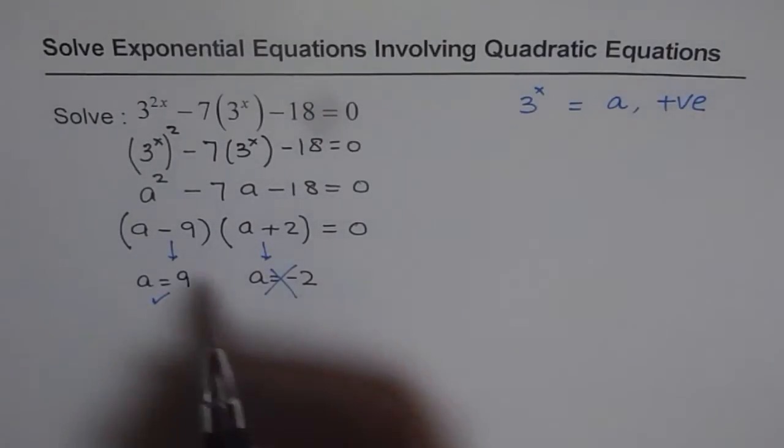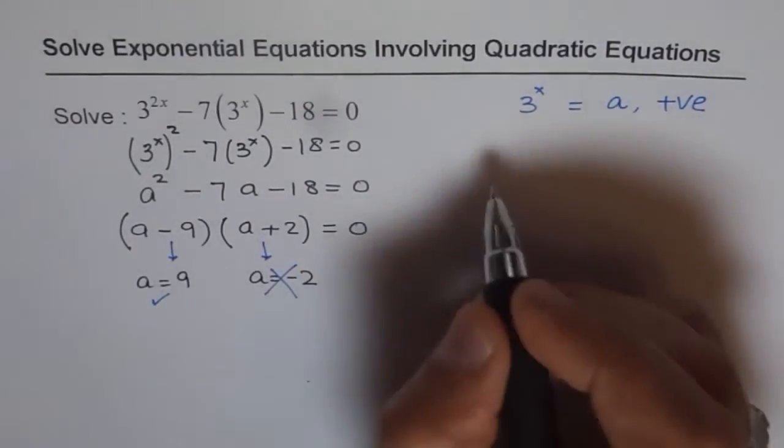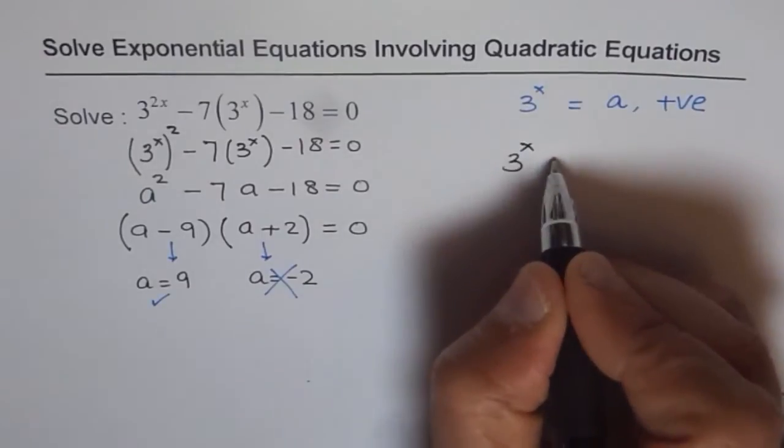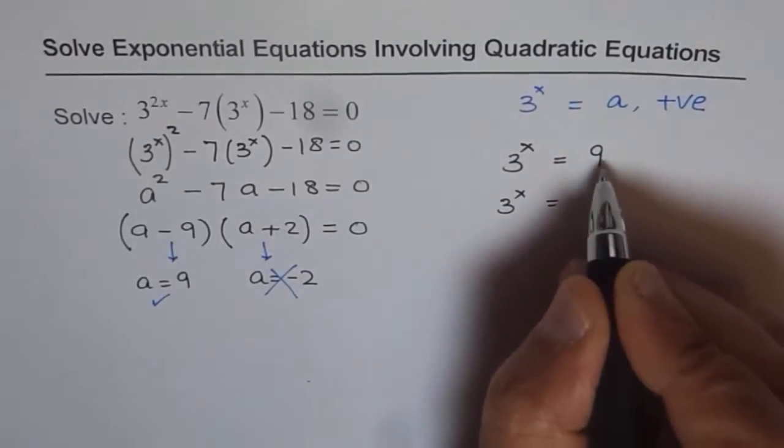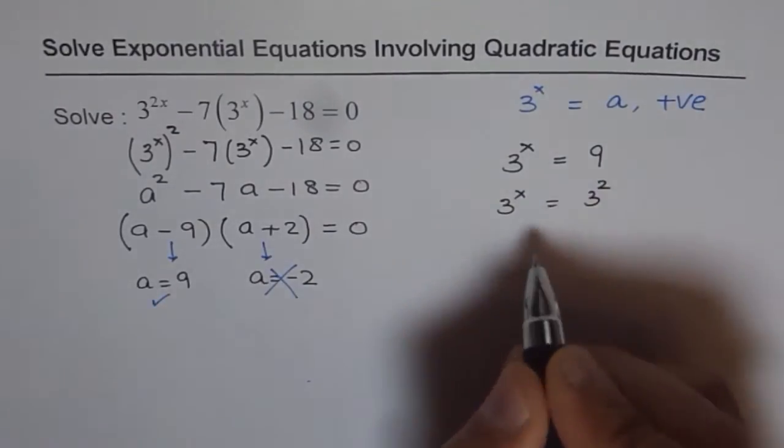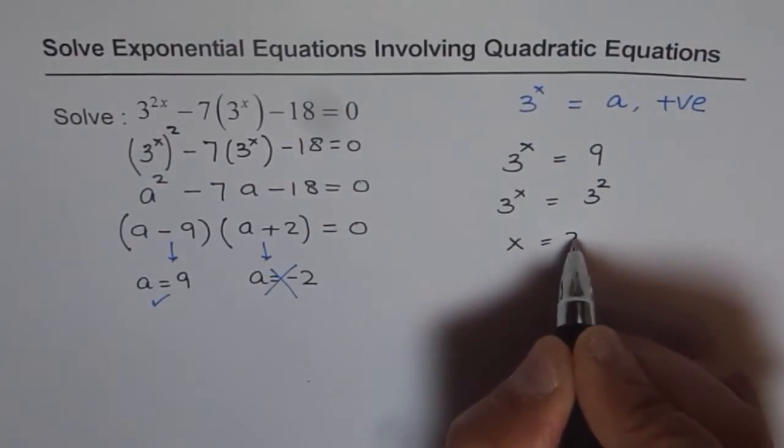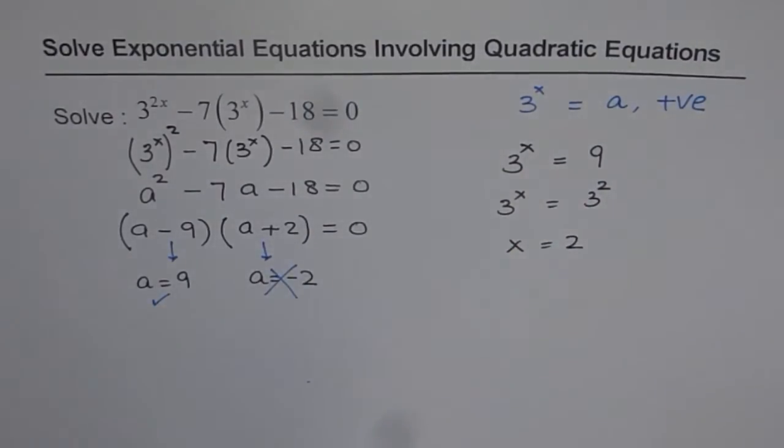So from here, we can find what x is. We can write 3 to the power of x equals 9. Now, we know 9 is 3 squared. And therefore, x equals 2 is the solution for the given equation.